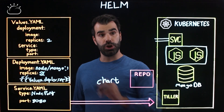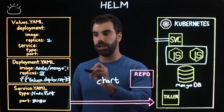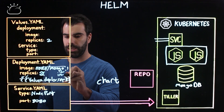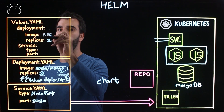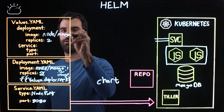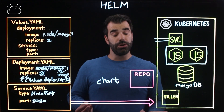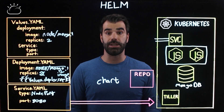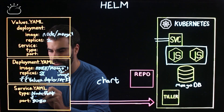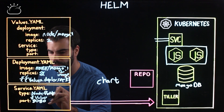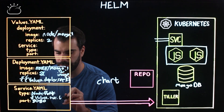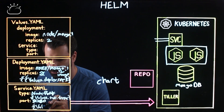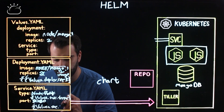Depending on what you want to hard code in your template, you can decide whether to keep that hard coded or refer to a configuration value — for example, image could point to node-mongo-1. You could do the same thing for your service as well. Let's say you want to go from using a NodePort to a load balancer in the future — you could change the type to values.service.type and the port to values.service.port.